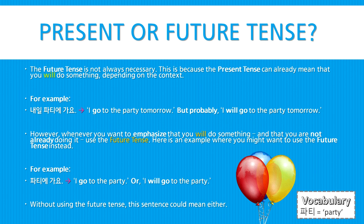Here's an example of when you might want to use the future tense instead of the present tense. 파티에 가요 means 'I go to the party,' or this could mean 'I will go to the party.' Without using the future tense, this sentence could mean either. So you might want to use the future tense in this case to say that it's not happening today.